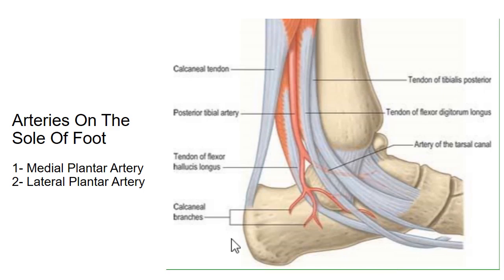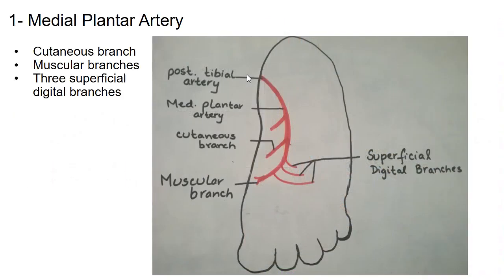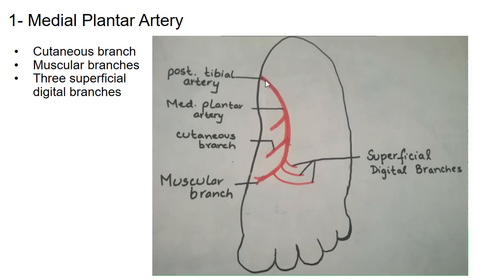Let's begin with the course and branches of the medial plantar artery. The first artery supplying the sole of the foot is the medial plantar artery. The posterior tibial artery divides into two terminal branches deep to the origin of the abductor hallucis muscle. The smaller terminal branch of the posterior tibial artery is the medial plantar artery, which lies along the medial border on the sole of the foot.